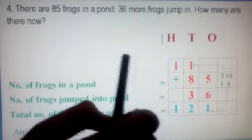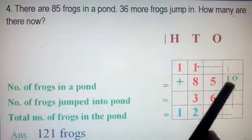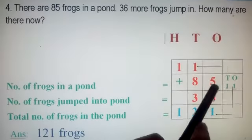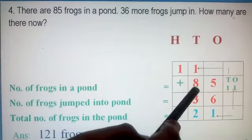Let's see how you have to write it. Number of frogs in a pond is 85, isn't it? So how will you write the 85? 5 in 1's place and 8 in 10's place.